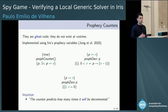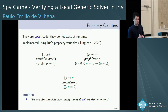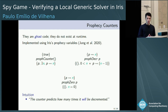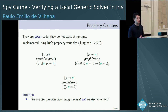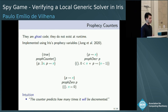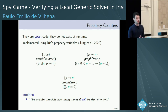Prophecy counters are ghost code — they do not appear at runtime. They are implemented using prophecy variables, which were recently introduced into Iris.